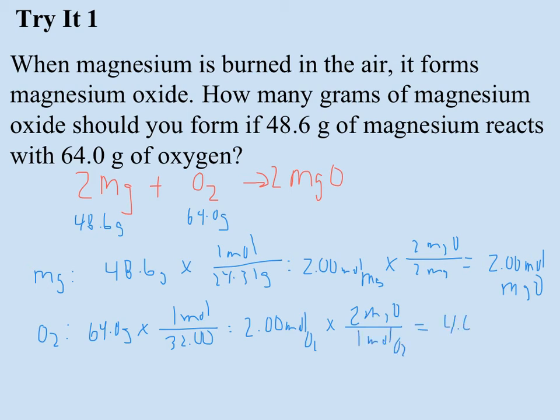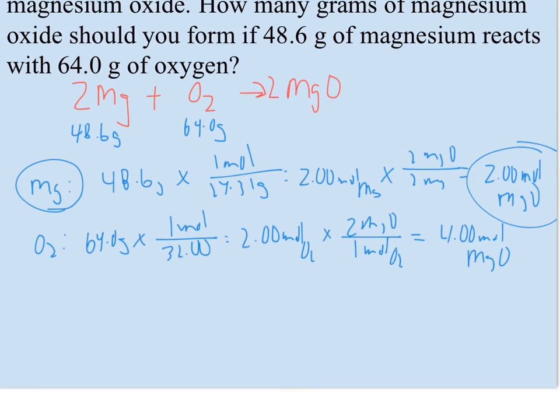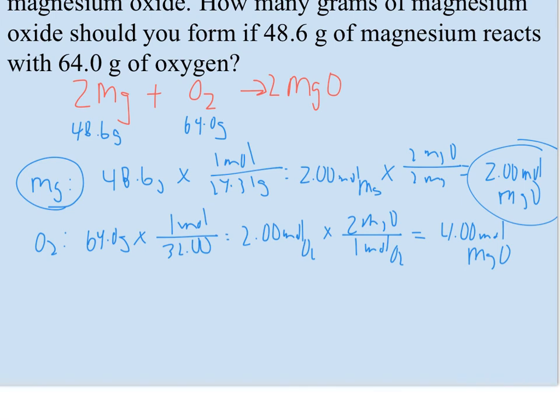But now when I convert to product, I get 2 moles of MgO from just 1 mole of O2. So this actually becomes 4 moles of MgO, which means my magnesium is my limiting reactant. So how many grams should I form? Well, since I can only make 2 moles of MgO because of the limiting amount of magnesium I have, I can now calculate my MgO.